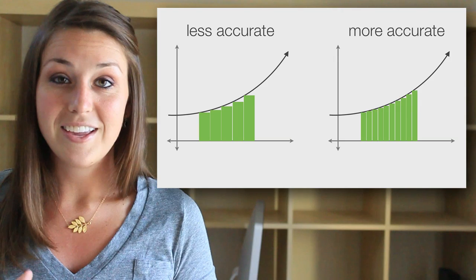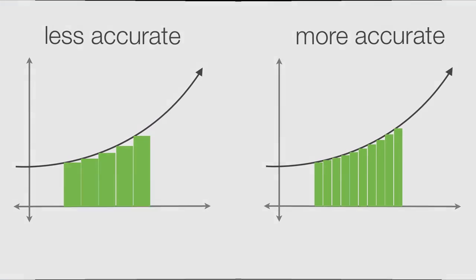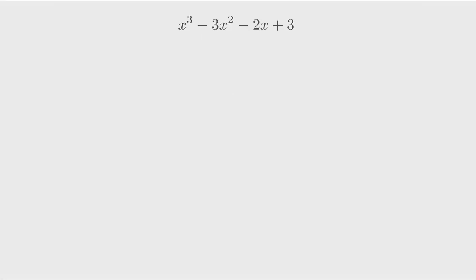Let's start with basic integral notation. Take this basic polynomial function as an example. To take its anti-derivative, we'll wrap it inside an integral and a dx. The integral symbol basically says, take the integral of this function and the dx says, with respect to x.